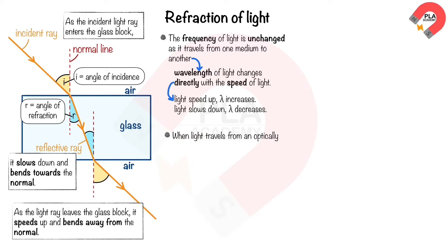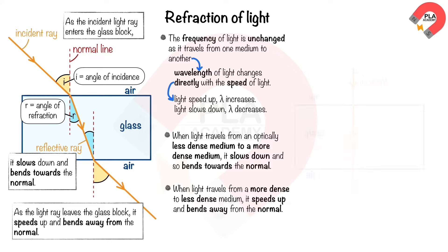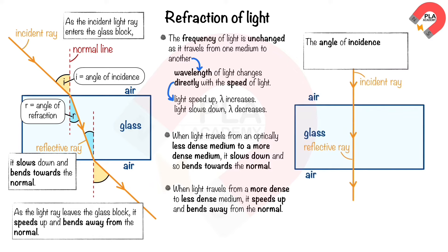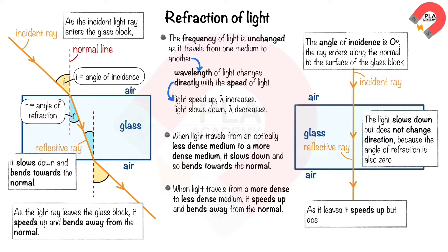When light travels from an optically less dense medium to a more dense medium, it slows down and bends towards the normal. When traveling from a more dense to less dense medium, it speeds up and bends away from the normal. If the angle of incidence is zero degrees, the ray enters along the normal and slows down but does not change direction, since the angle of refraction is also zero.